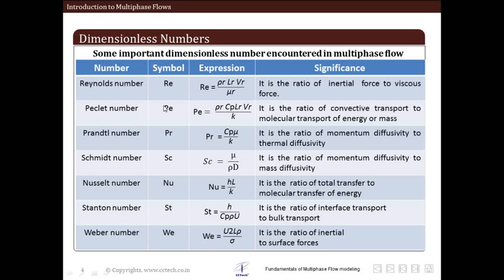Next is the Peclet number, given by the symbol Pe. Its significance is that it is the ratio of convective transport to molecular transport of energy or mass. It is given by the ratio of density, specific heat, length scale, and velocity scale divided by conductivity. Next is the Prandtl number, given by Pr. Its significance is that it is the ratio of momentum diffusivity to thermal diffusivity, given by the ratio of specific heat multiplied by viscosity divided by conductivity.